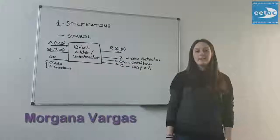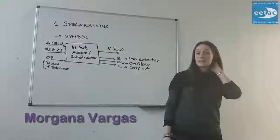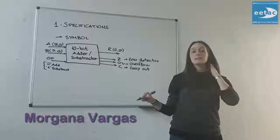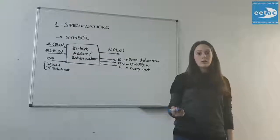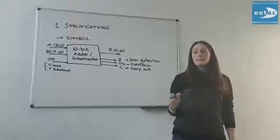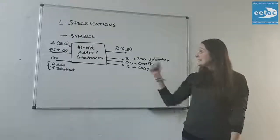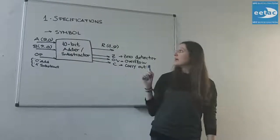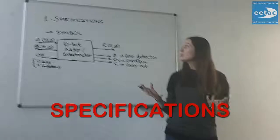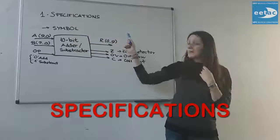Good morning, we are group 4 of the subject Digital Circuits and Systems and we are here to explain the first project of the subject, which is the project in chapter 1. It is a terminal subtractor and first of all to begin with the explanation we will start with the specifications.